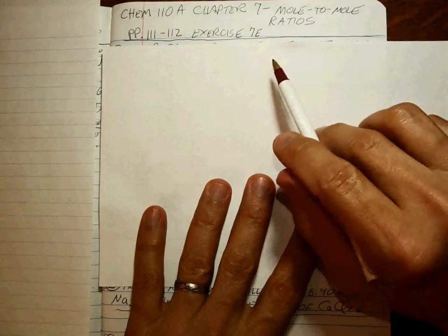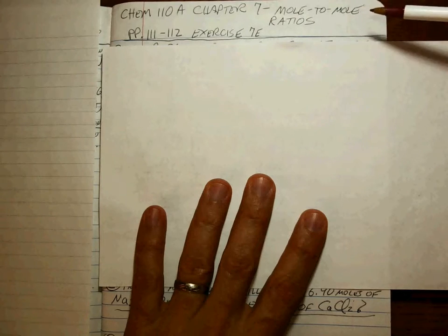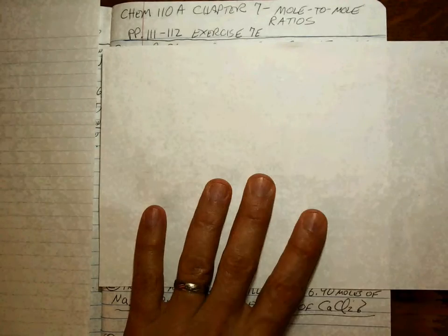Welcome back. Chapter 7, we're doing mole-to-mole ratio problems, and this is called mole stoichiometry, page 111-112, exercise 70.